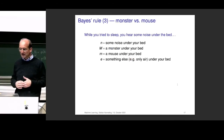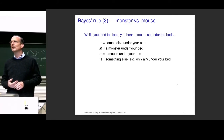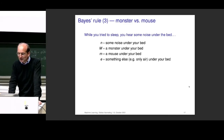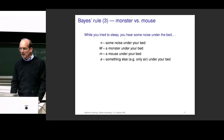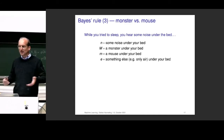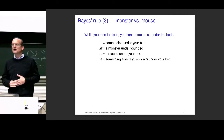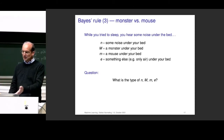Here's an example where we won't fail: the monster versus mouse example. You are trying to sleep and you hear some noise under the bed. Is it a monster, a mouse, or something else? Let's formalize it. We have Boolean variable N — true if there's noise under the bed. Capital M — true if there's a monster. Lowercase m — true if there's a mouse. And E — something else. They are mutually exclusive: only one can be true.